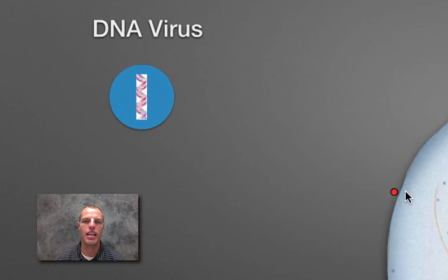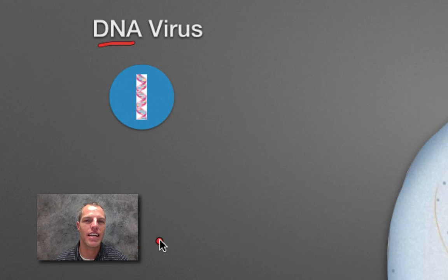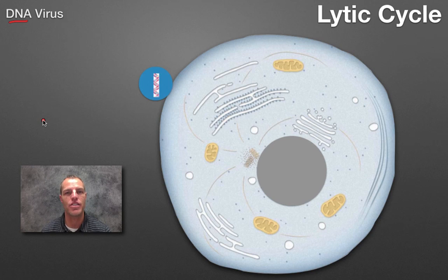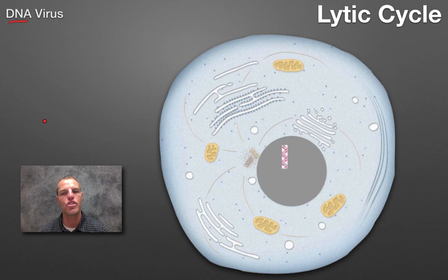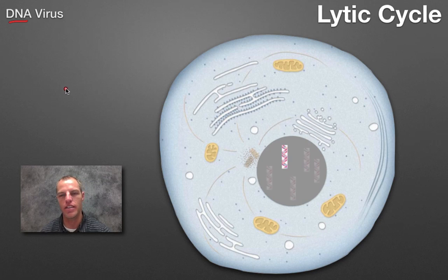Looking up here in the top left, I have my virus — the blue represents the protein coat, and this little strand of DNA represents the DNA. So this is a DNA virus, containing DNA on the inside, not RNA. For the lytic cycle, the virus needs to attach to that cell. Those glycoproteins have to match up to the receptor proteins, and then the cell invites it in — attachment occurs. As it enters, it sheds that protein coat; it doesn't need it anymore. That viral DNA then takes over the gene factory, replicating viral DNA instead of the cell's normal DNA, giving us multiple copies of viral DNA.